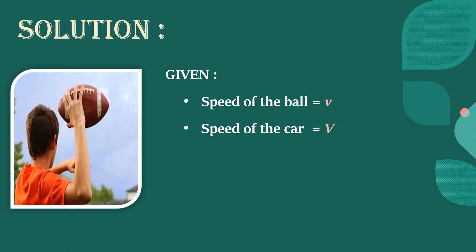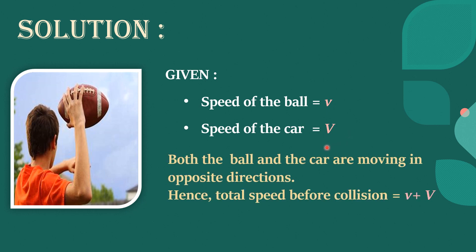Solution. It is given that speed of the ball equals small v and speed of the car equals capital V. Both the ball and the car are moving in opposite directions. Hence, total speed before collision equals small v plus capital V.